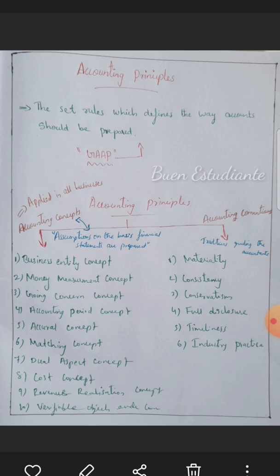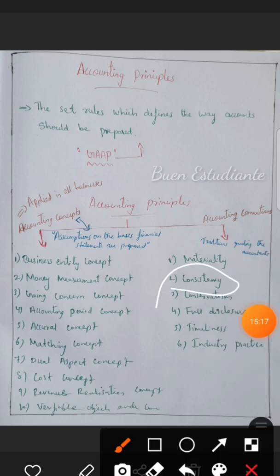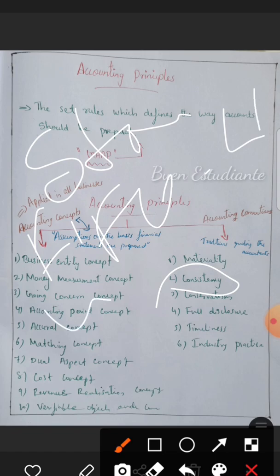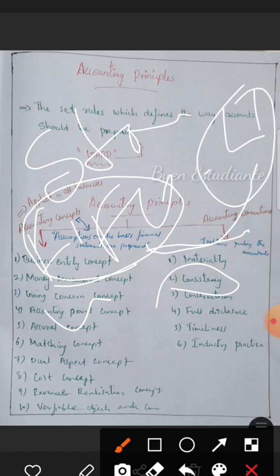The Consistency convention means that once a business adopts a particular accounting method, it should continue to use the same method consistently year after year. For example, if a company uses the FIFO method for inventory valuation or the Diminishing Balance method for depreciation, it should apply the same method consistently and not switch between methods arbitrarily.